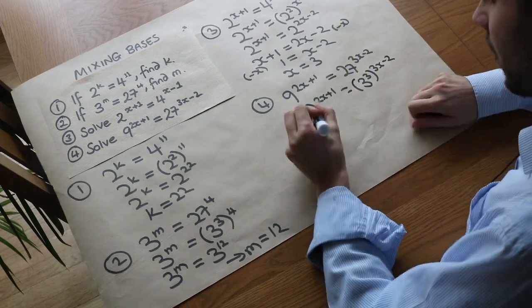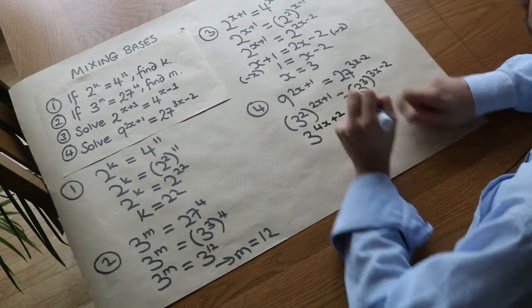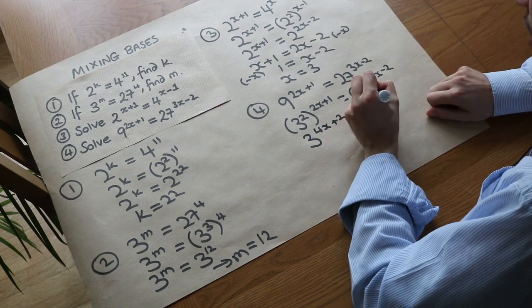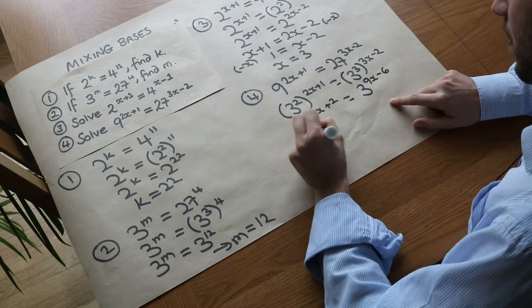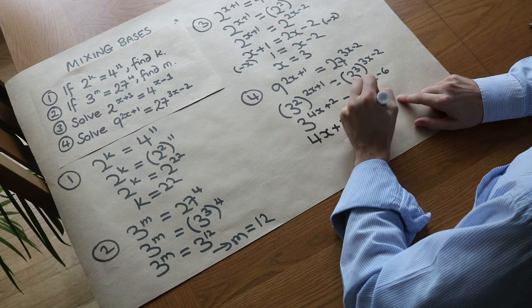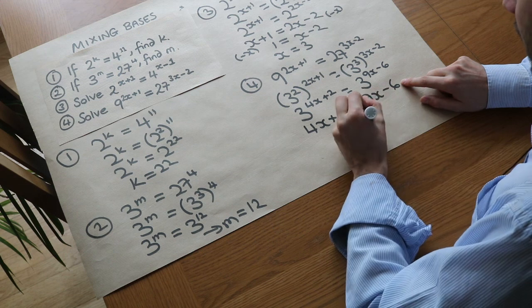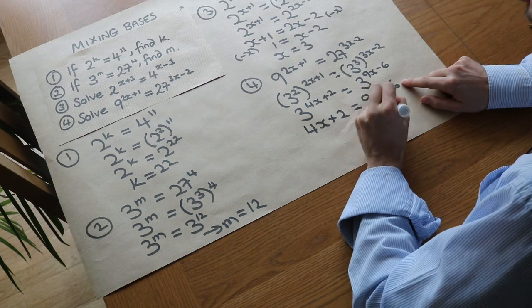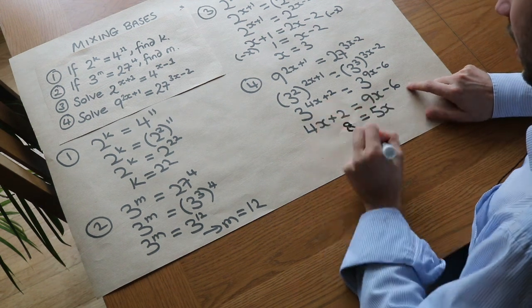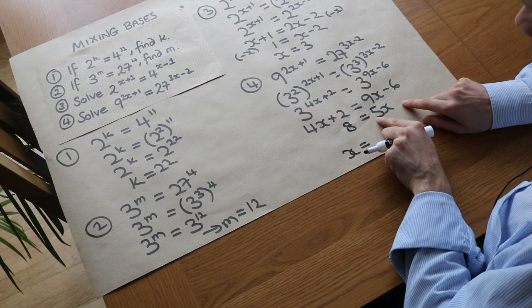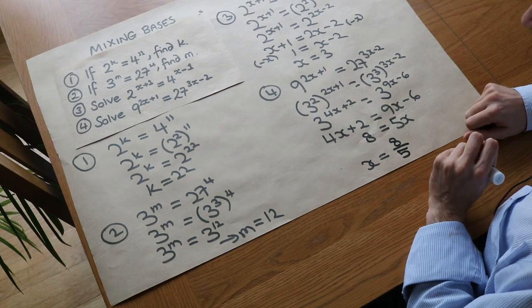2 times (2x+1) is 4x+2, and 3 times (3x-2) is 3^(9x-6). Now the bases are the same, so equate the powers: 4x+2 = 9x-6. Collect the x's on the right side because we've got more there. Subtract 4x to get 5x, and add 6 to get rid of that -6. 2+6 is 8. Divide both sides by 5 and we have x = 8/5. That is the solution.